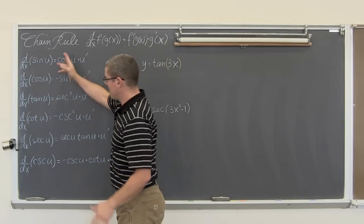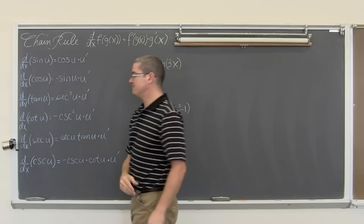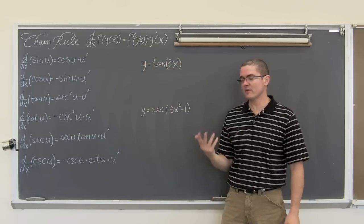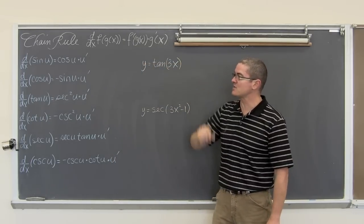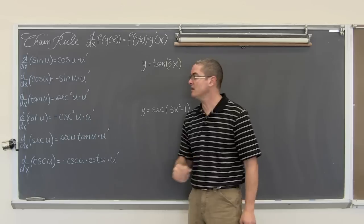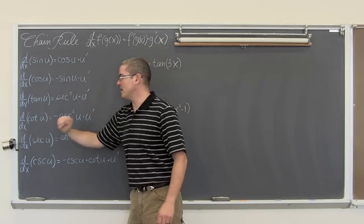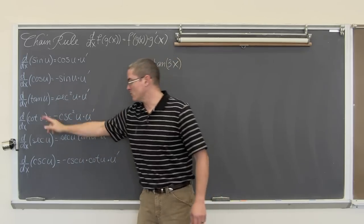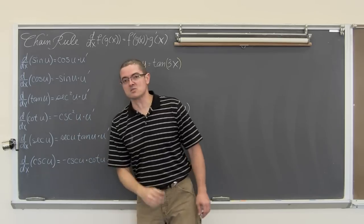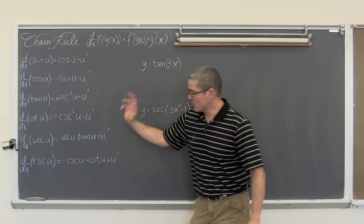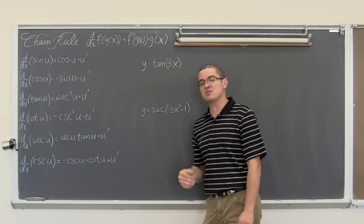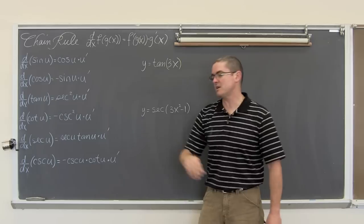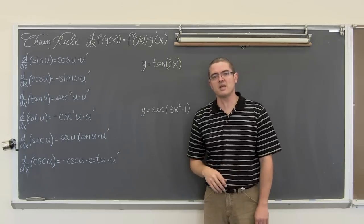We have our six rules for derivatives of trig functions. The derivative of sine is cosine. Derivative of cosine is negative sine. Derivative of tangent is secant squared. Derivative of cotangent is negative cosecant squared. The derivative of secant is secant times tangent. And finally the derivative of cosecant is negative cosecant times cotangent.